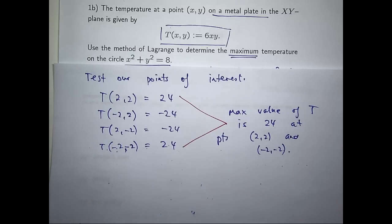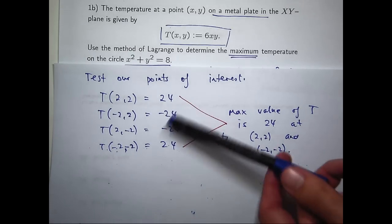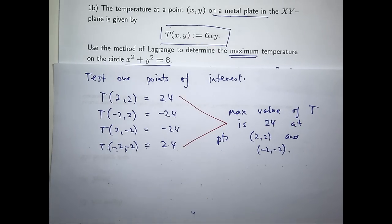If they ask you to calculate the minimum value as well, well, you'd have to take into account the -24 and the two points associated with that.